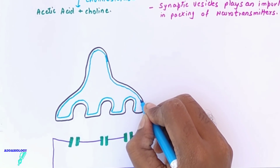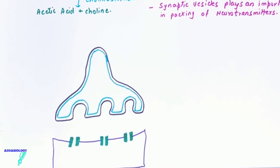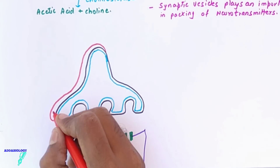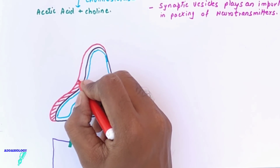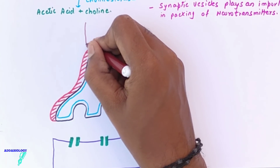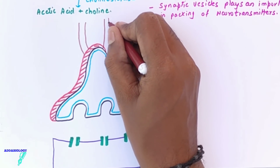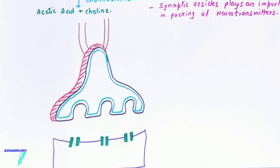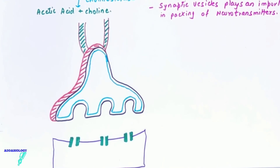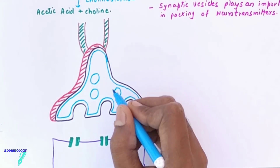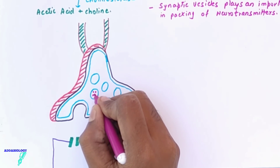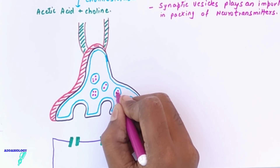This is one of the most important diagrams that can come in your exam, including NEET diagrammatic questions. The upper part is the axon and the lower part is the dendron. The gap between them is the synaptic cleft — 20 to 30 nanometers. Inside we show vesicles, which contain the neurotransmitters.